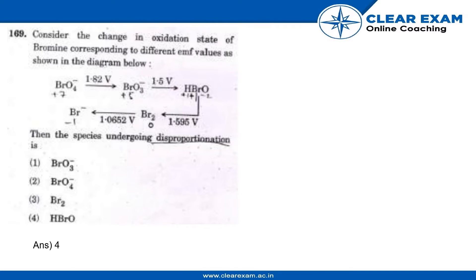The question is: consider the change in oxidation state of bromine corresponding to different EMF values as shown in the diagram below. We have to check the change in oxidation state of bromine, then find the species undergoing disproportionation reaction.